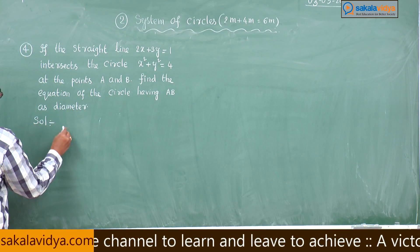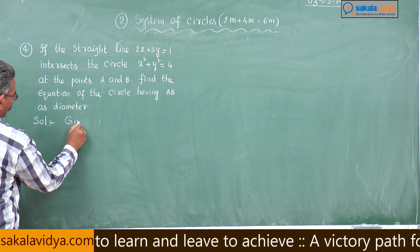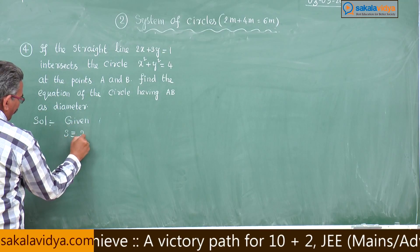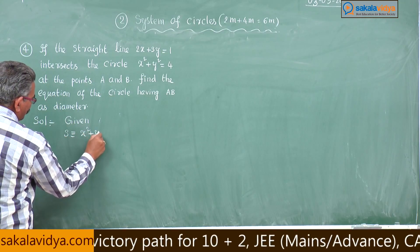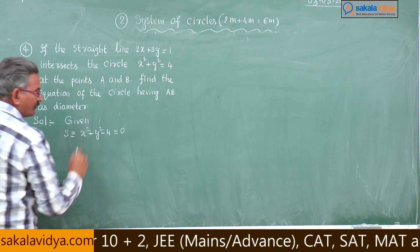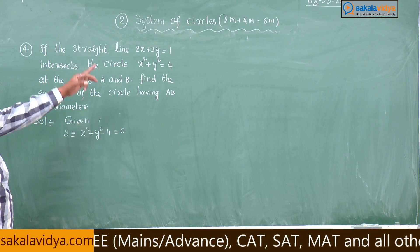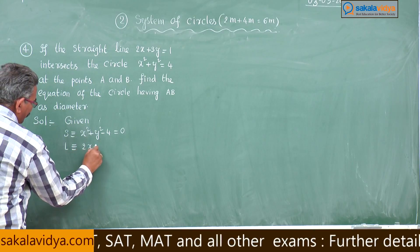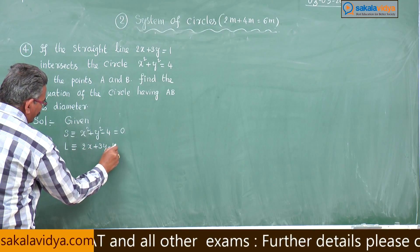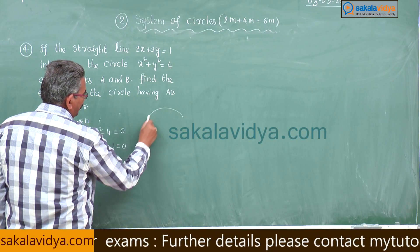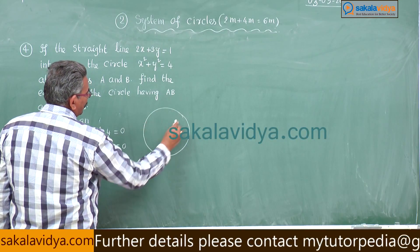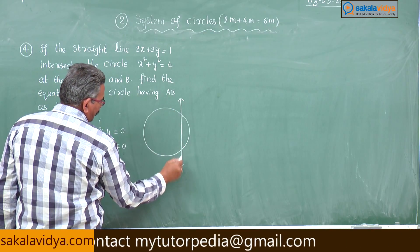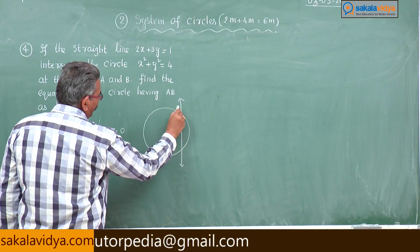Solution: the given circle s = x² + y² − 4 = 0, and the chord l: 2x + 3y − 1 = 0. This is the equation of the circle, and this is the chord which cuts the circle at A and B.